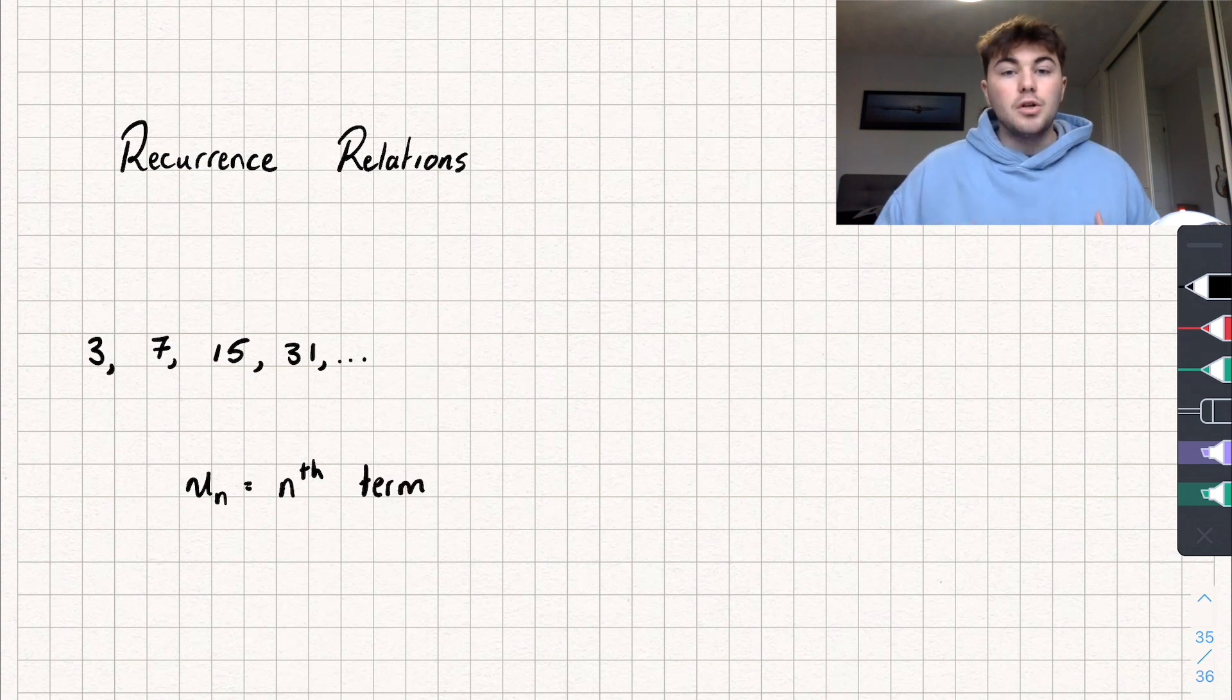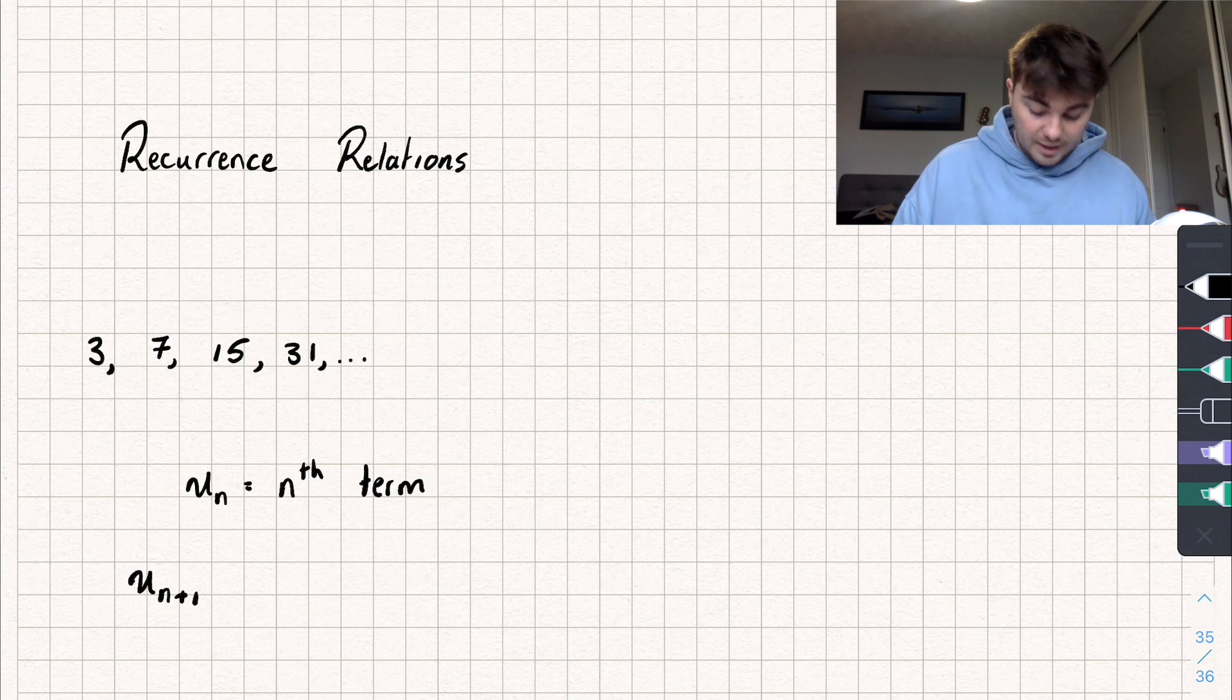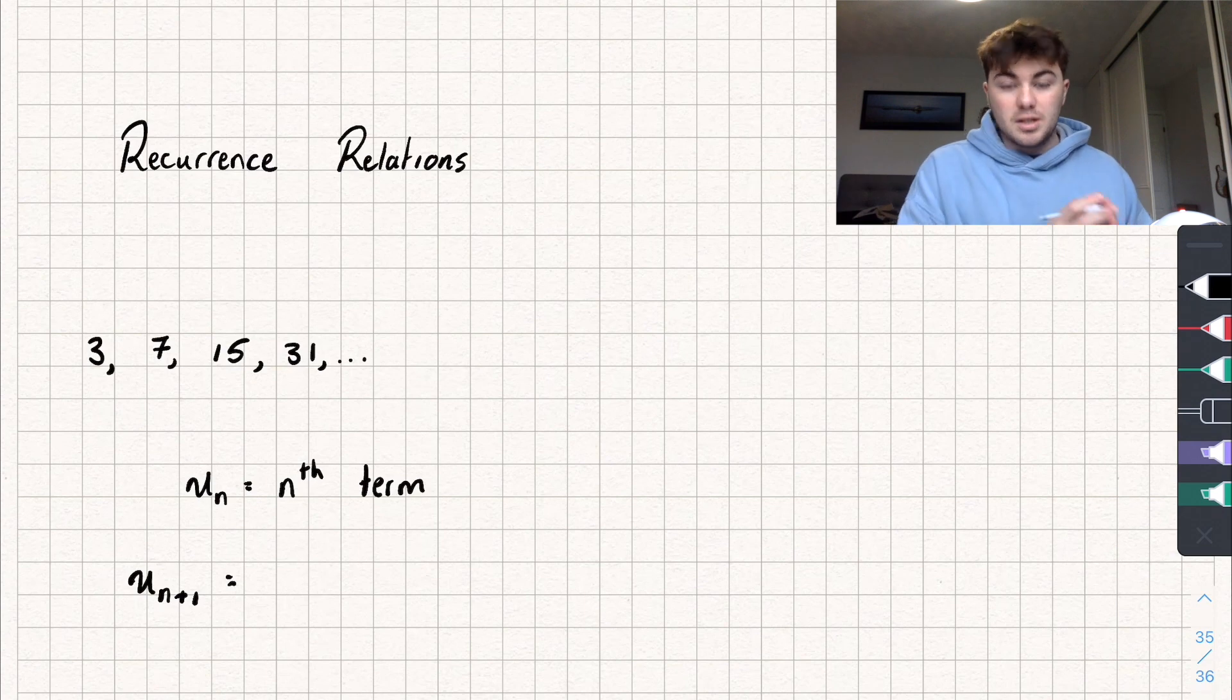So with a recurrence relation, you'll have something given to you like this, u_{n+1}. So to find the next term in the sequence, that will usually be equal to some expression involving the previous term.